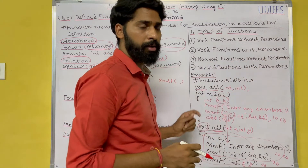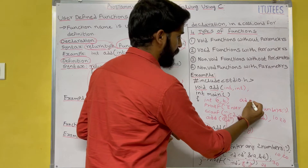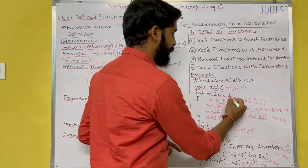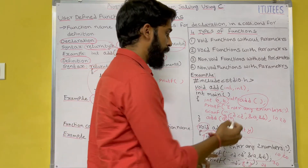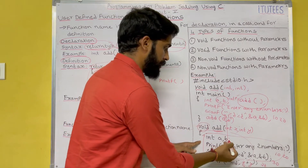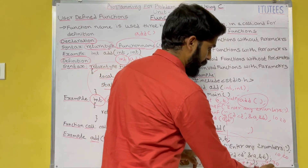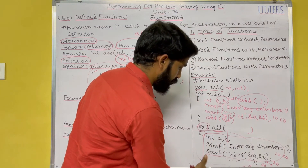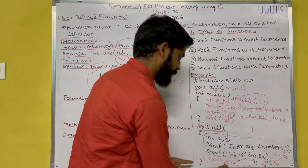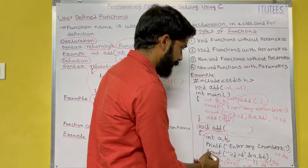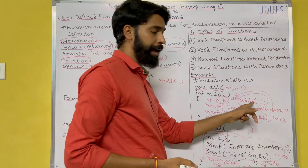Third type: non-void functions without parameters. This function returns a value but has no arguments. In main, you write int p = add(). Inside the add function, you declare int a, b; read values from the keyboard; then write 'return a + b'. For example, if a is 10 and b is 20, the value 30 is returned to p. So this function returns a value which is assigned to p.